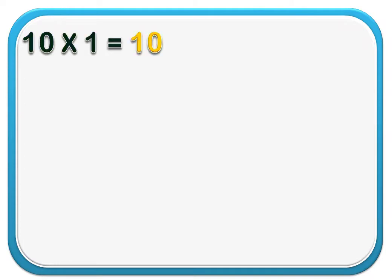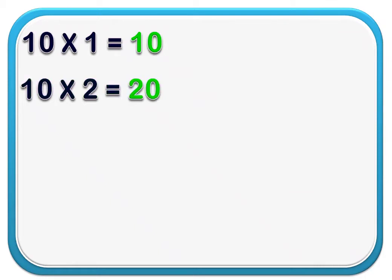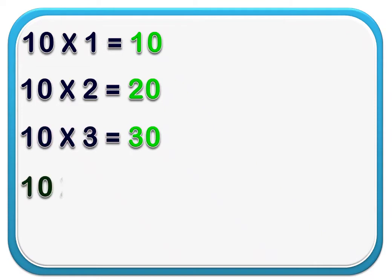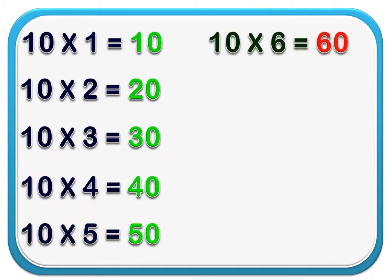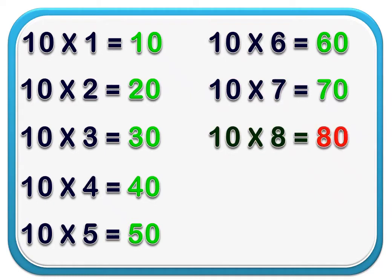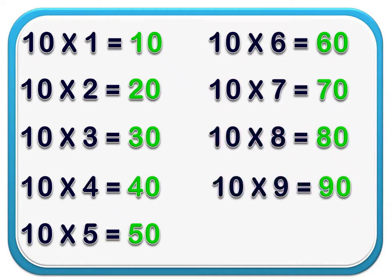10 1 is 10. 10 2 is 20. 10 3 is 30. 10 4 is 40. 10 5 is 50. 10 6 is 60. 10 7 is 70. 10 8 is 80. 10 9 is 90. 10 10 is 100.